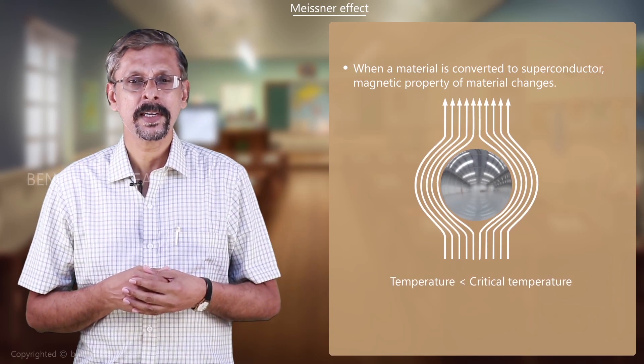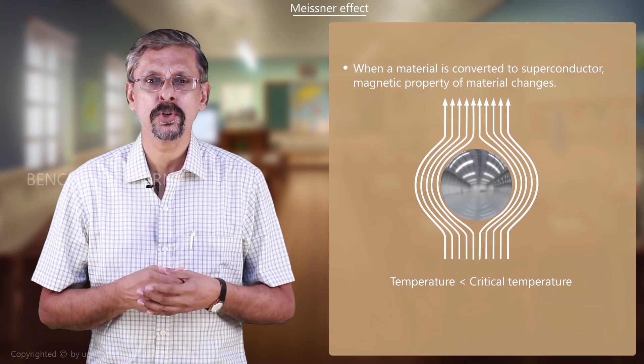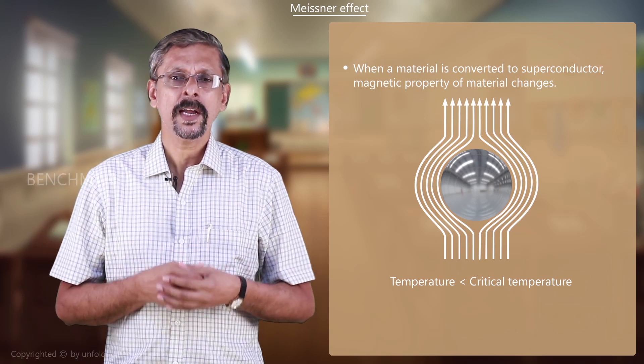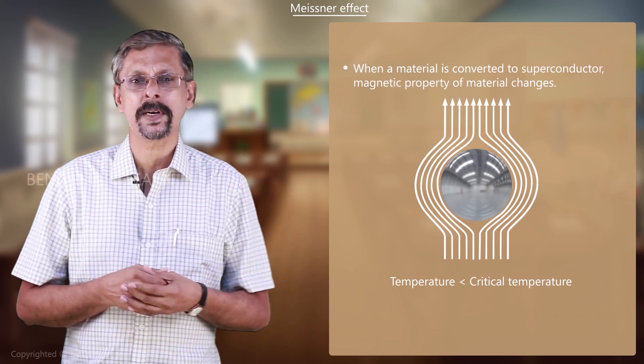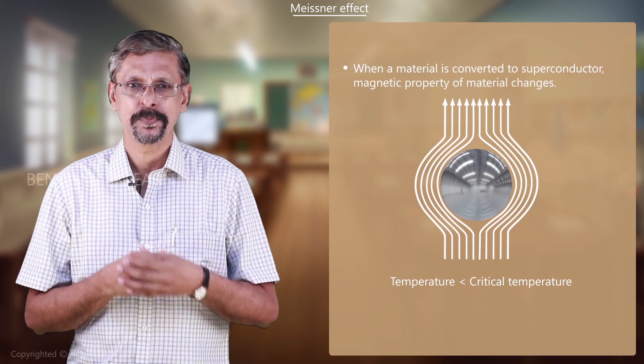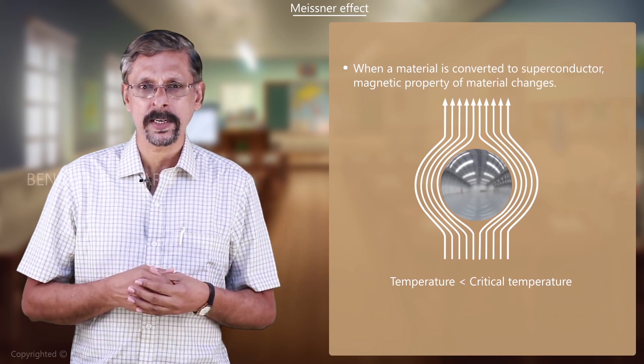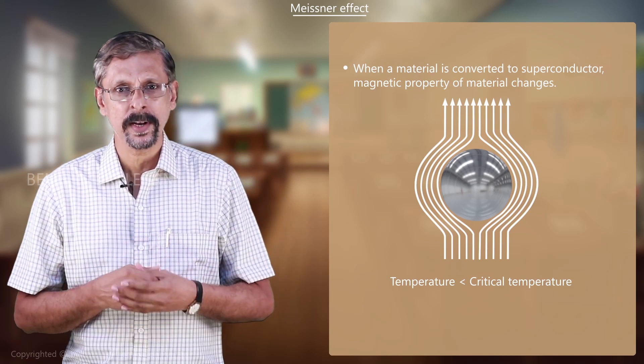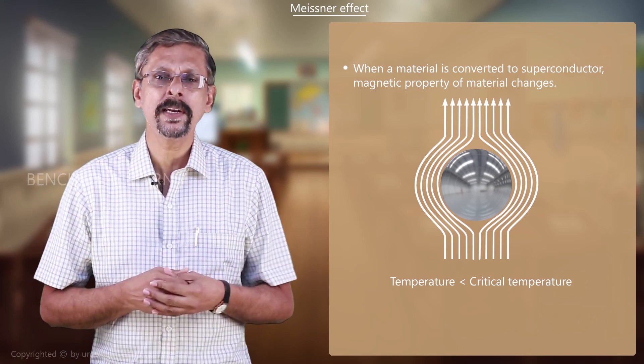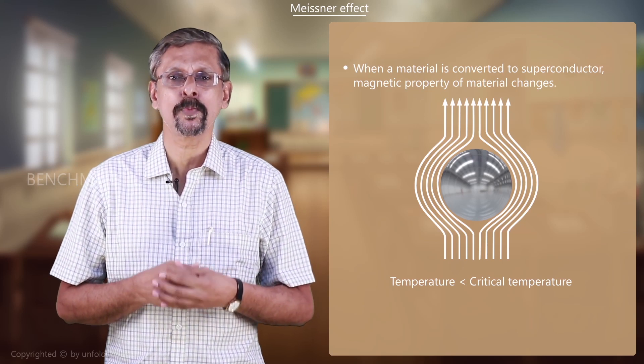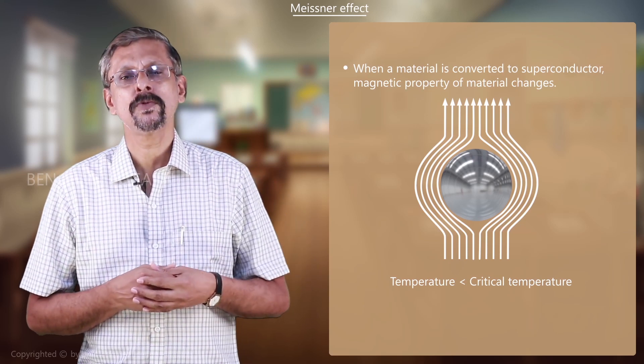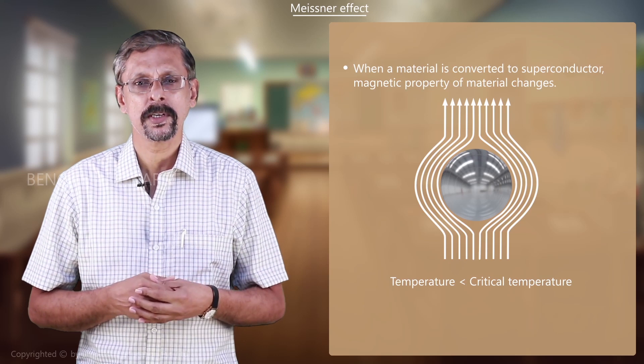So what happens is the material is now converted into a diamagnetic material and the magnetic field inside the superconductor is zero. When a superconductor is cooled below the critical temperature in an external magnetic field, the magnetic field lines are expelled from the superconductor and this is what is known as the Meissner effect.